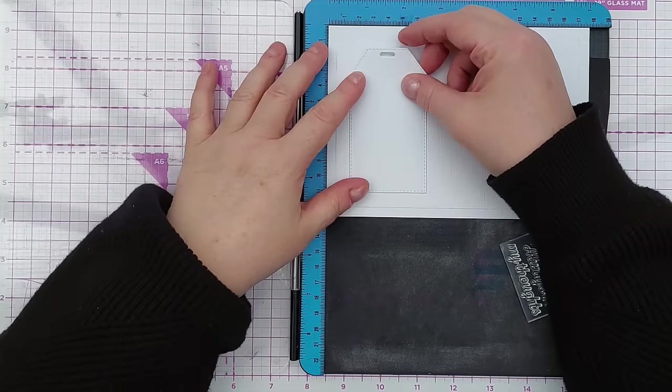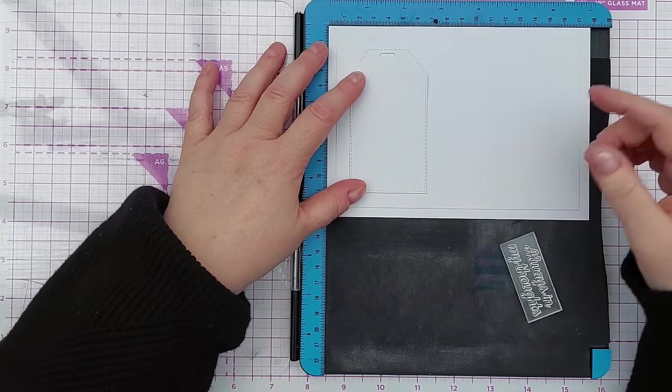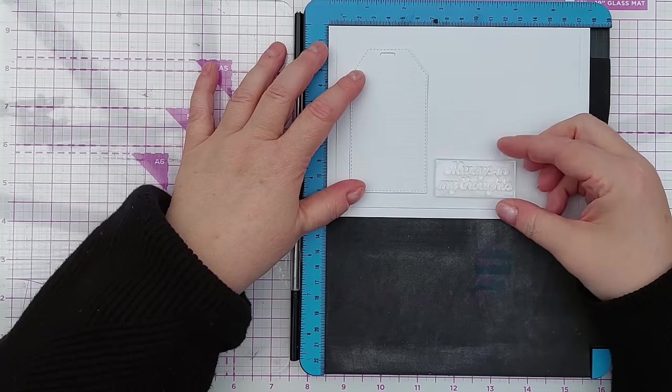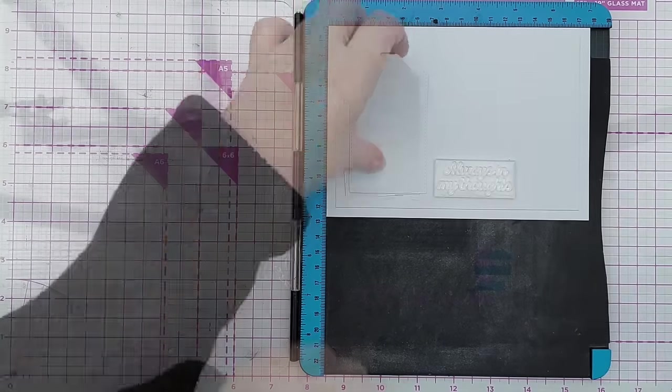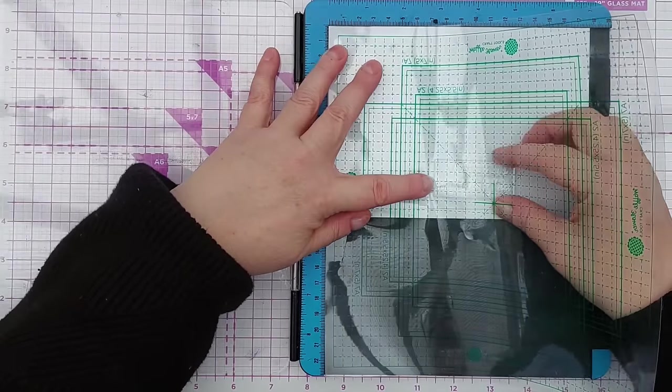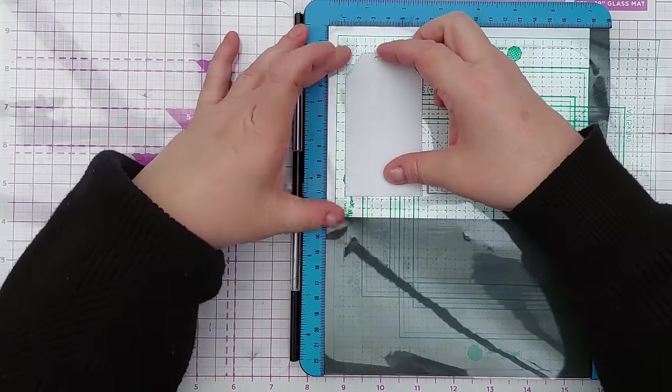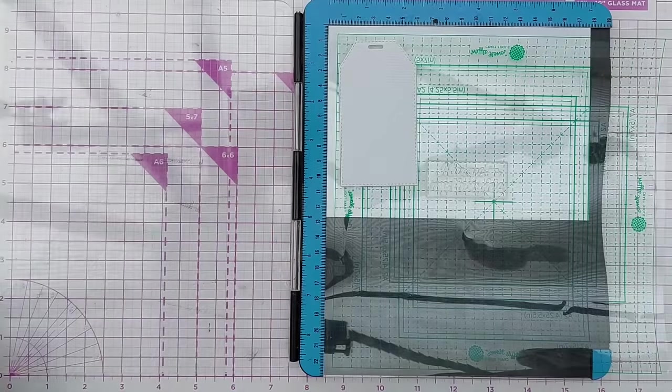So I'm going to put a tag here on this part of the card, and that means my sentiment is going to go about there. But to help me get it lined up straight, I've got this grid.